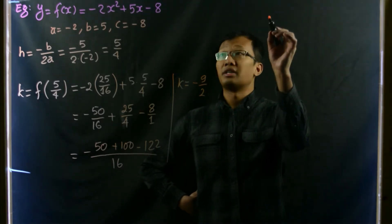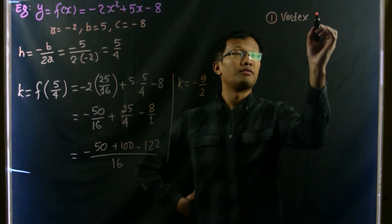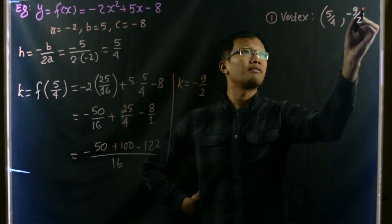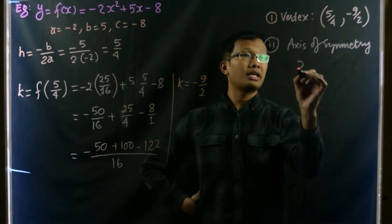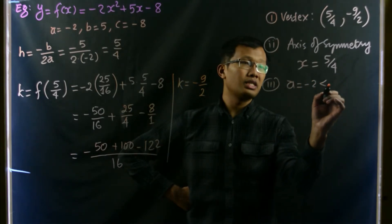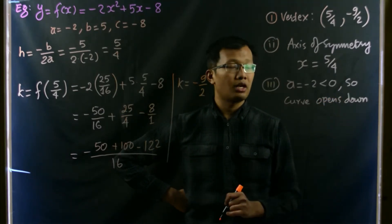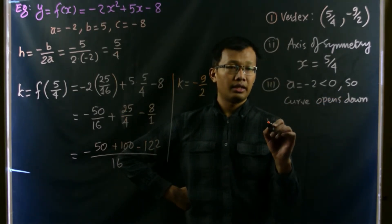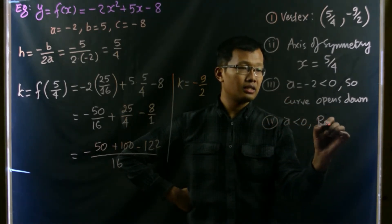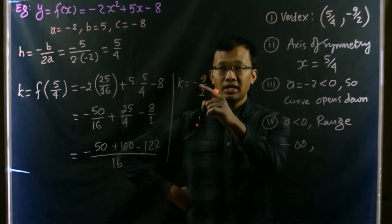Thus we obtain the vertex for this curve: vertex is (5/4, negative 9/2). The axis of symmetry is x equals 5/4. Since a equals negative two, which is less than zero, the curve opens downward. And since a is less than zero, the range is negative infinity up to k, which is negative 9/2.